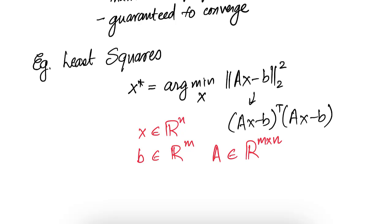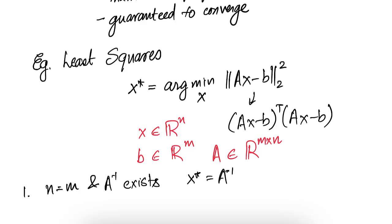How do we solve the least squares problem? It depends on what m and n are and what the properties of A are. The easiest case is when n equals m and A inverse exists. In that case, x star equals A inverse b — and since norm squared is always non-negative, A inverse b gives a value of 0 for the objective, which means it is also the optimum.